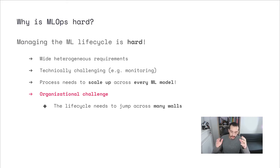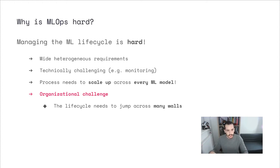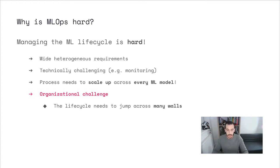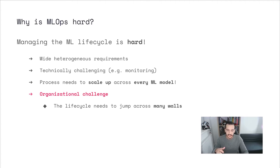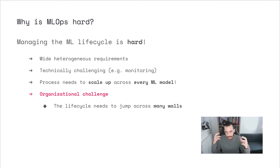Why is it hard? Each one of these steps usually has a very wide range of requirements. For data processing, you typically need a massive distributed architecture to process data at scale. For training, you may not need that, but you need GPUs or TPUs — a specialized infrastructure. And when you move to inference, you may not need any of that because your model at inference time may be much more efficient, though it depends on the model and toolkit. Some of these steps are also technically challenging, like monitoring — detecting outlier instances or concept drift between inference-time and training datasets. When you scale this across every model in your organization, it becomes extremely hard.